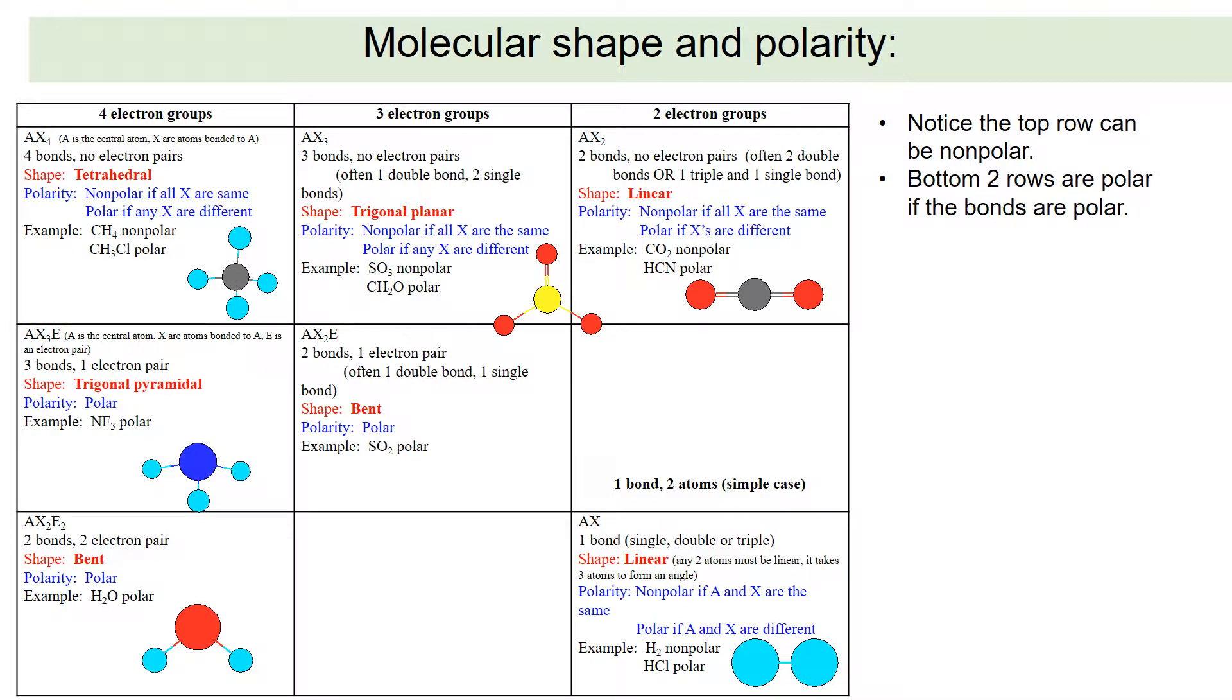So let's go back to this chart and notice how polarity fits in. Notice the top row, the tetrahedral, the trigonal planar, and the linear shapes. If they have the same atom at each location, then they're symmetrical. And so they're nonpolar. So all of these are nonpolar if all the X, X being the atoms attached to the central molecule. If they're all the same, it's nonpolar. If any one of those atoms is different, then it's polar.